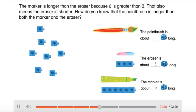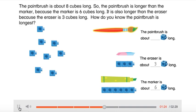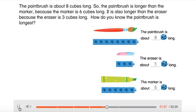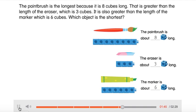How do you know that the paintbrush is longer than both the marker and the eraser? How do you know the paintbrush is longest? The paintbrush is the longest because it is eight cubes long. That is greater than the length of the eraser, which is three cubes. It is also greater than the length of the marker, which is six cubes. Which object is the shortest?